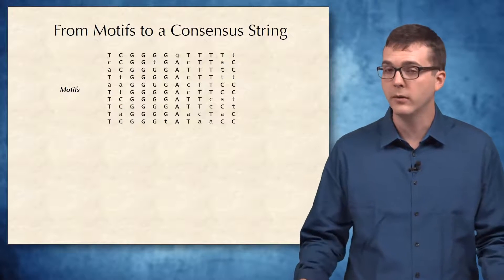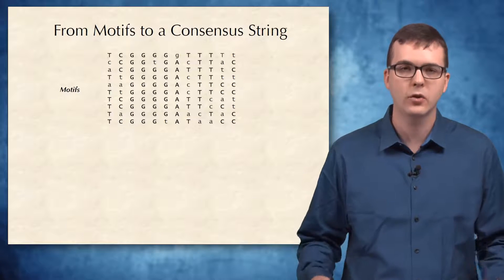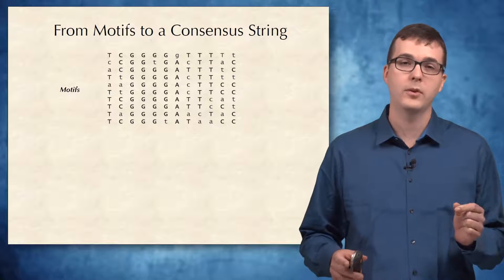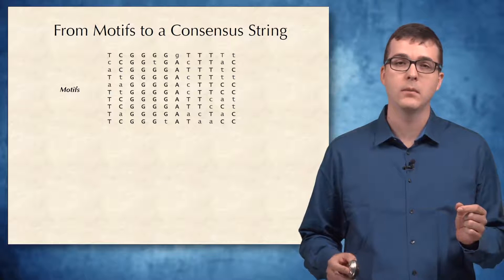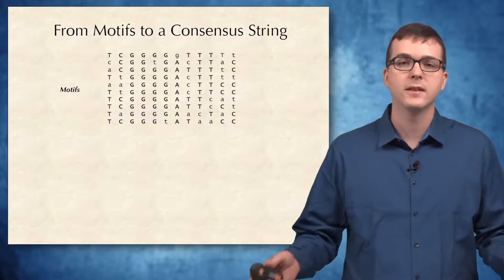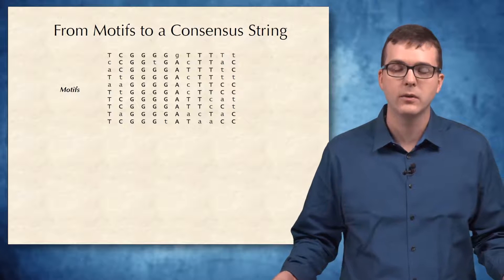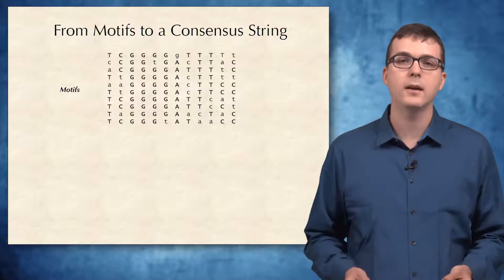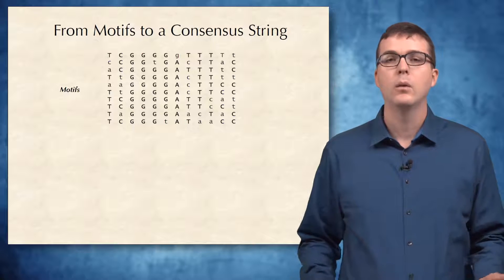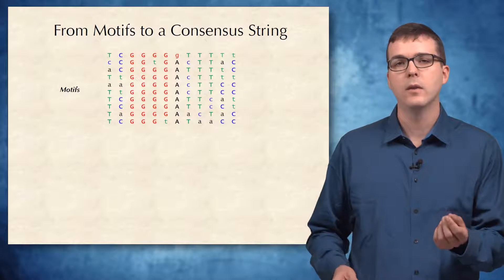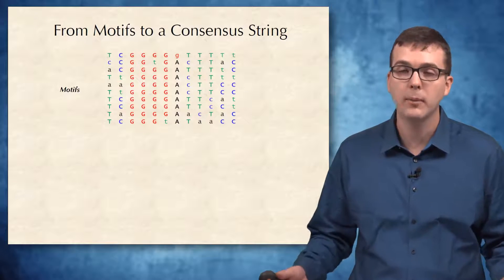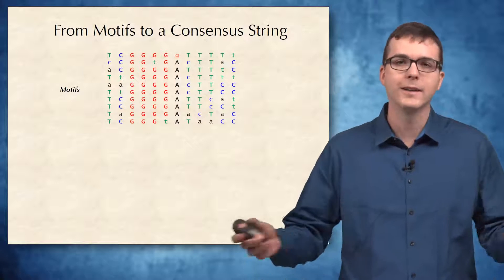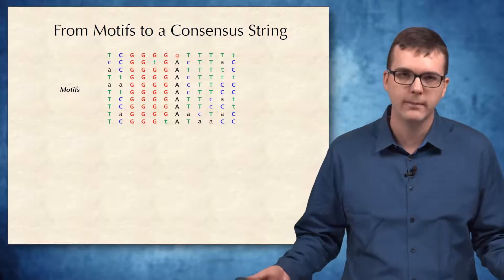As an alternative, our plan is to assign a score to a given collection of K-mers chosen from the strings. Say that we have selected such a set of K-mers, which we call motifs, represented here as a matrix. We indicate the most frequent nucleotide in each column of this matrix by a capital letter, breaking ties arbitrarily.